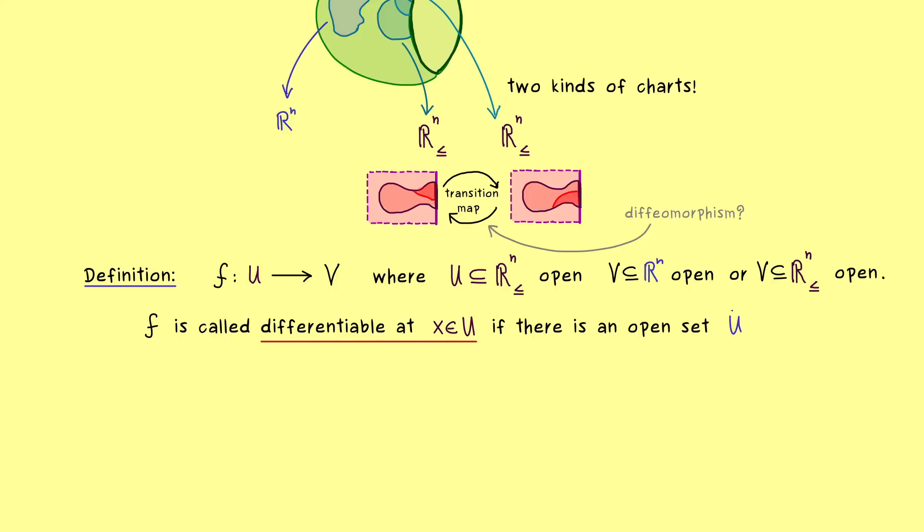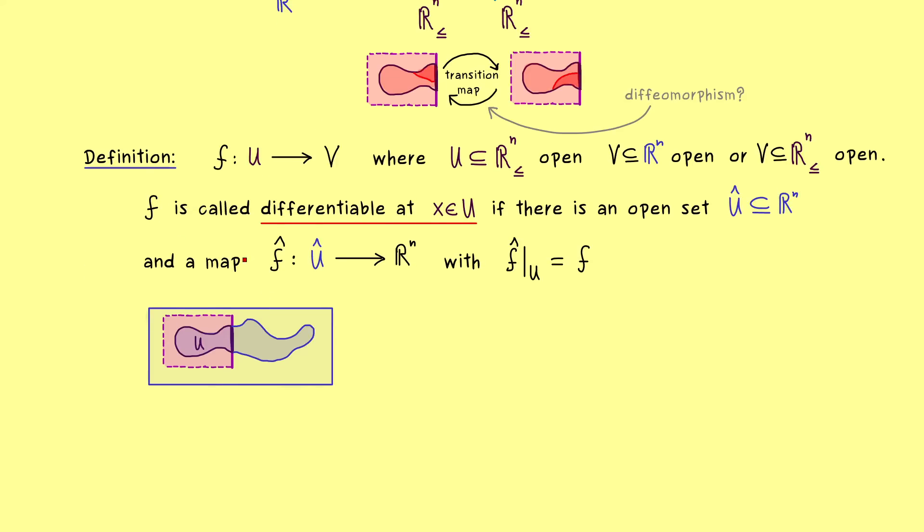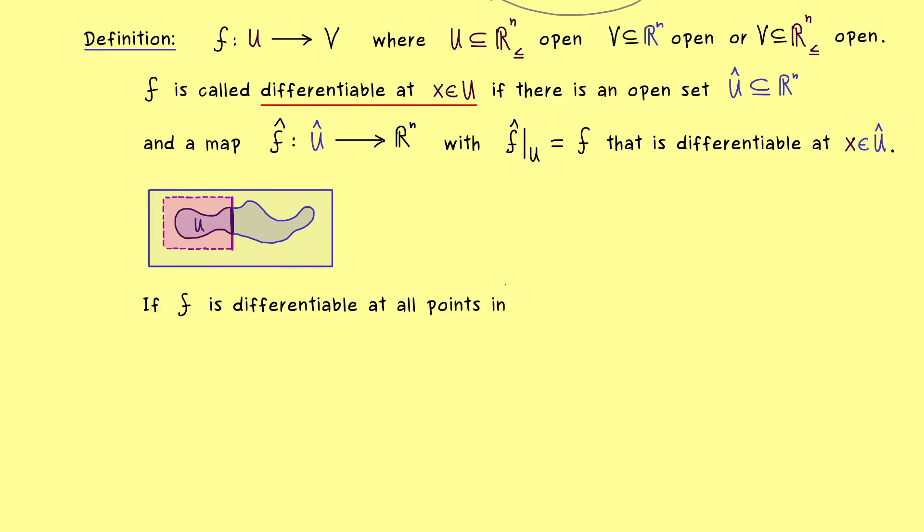So more concretely, we would take an open set U-hat in Rⁿ as before, and then we want to have a function f-hat defined on this U-hat. And now, in order to keep it simple, we can also say that all the values just lie in Rⁿ. But of course, the requirement we want here is that f-hat restricted to our U is f again. This means for all the points in U, there is simply no difference between f and f-hat. And now we just want to have that this extension is differentiable in the ordinary sense at x. In other words, f-hat now sees x as an inner point in the open set U-hat.